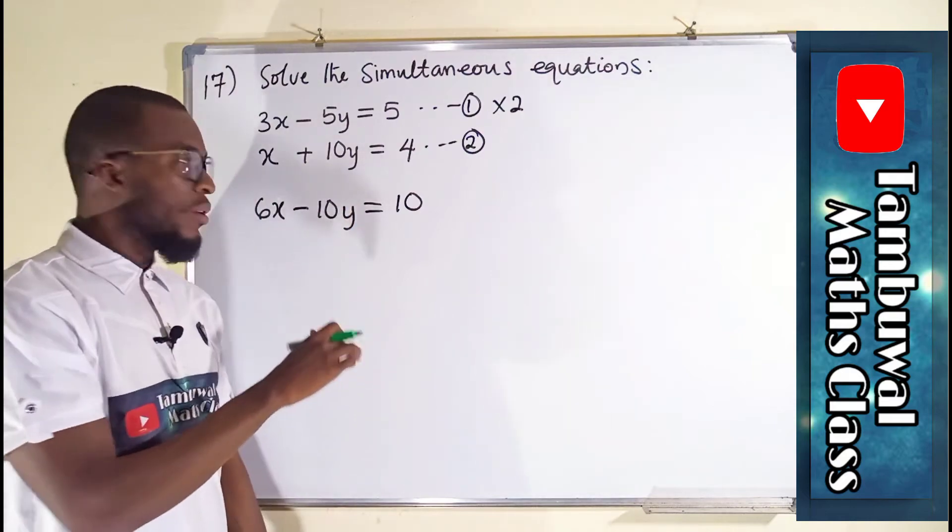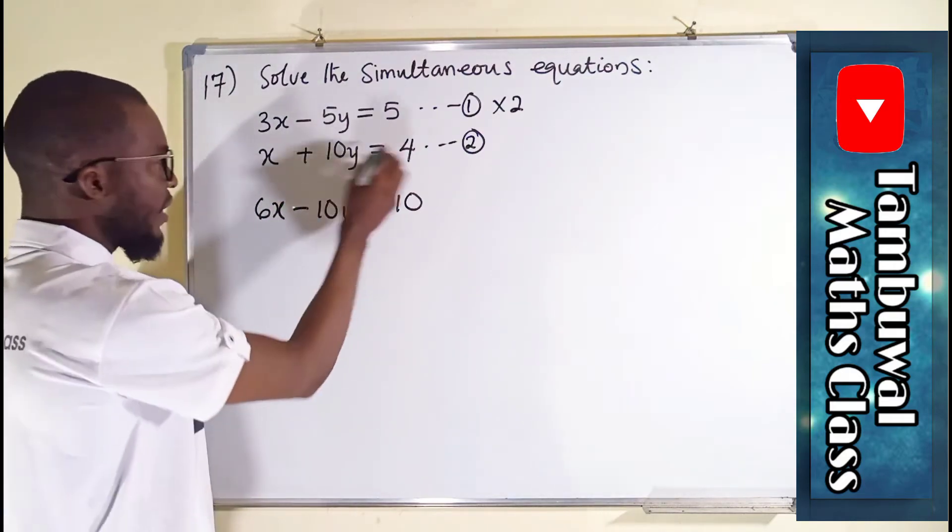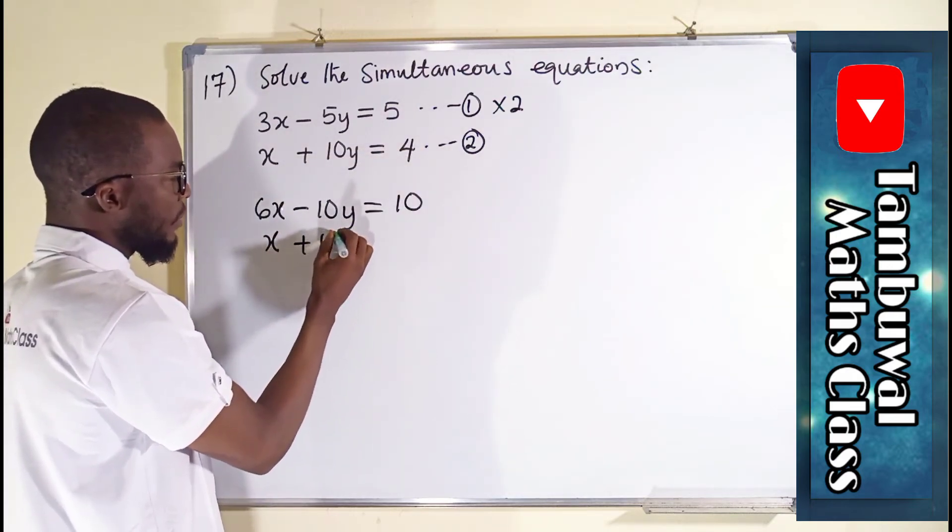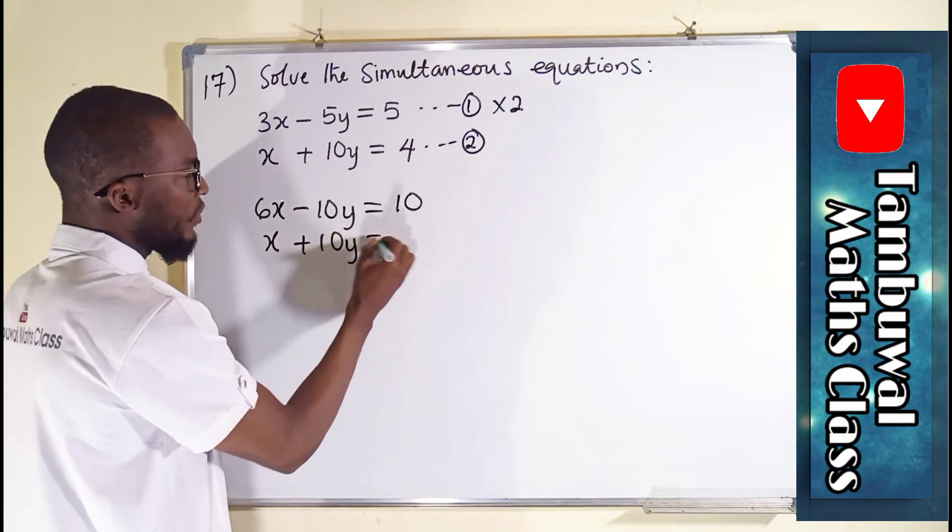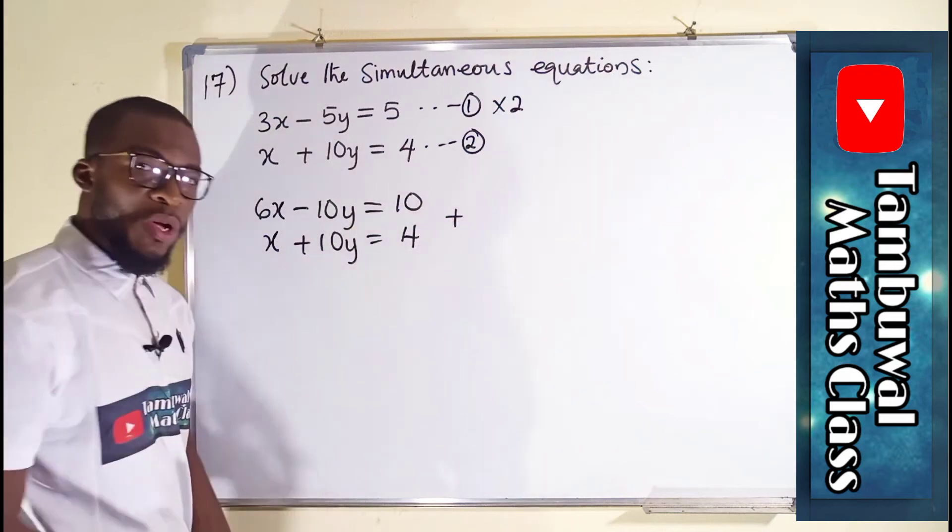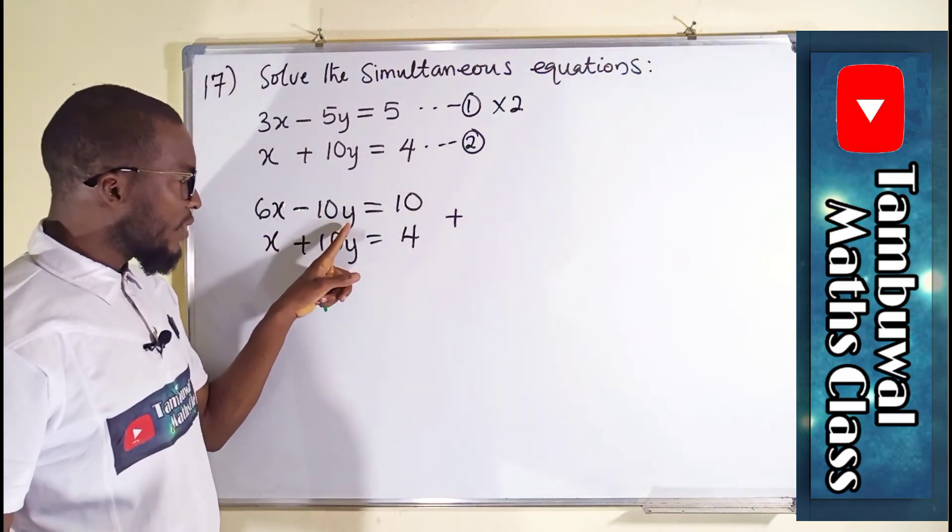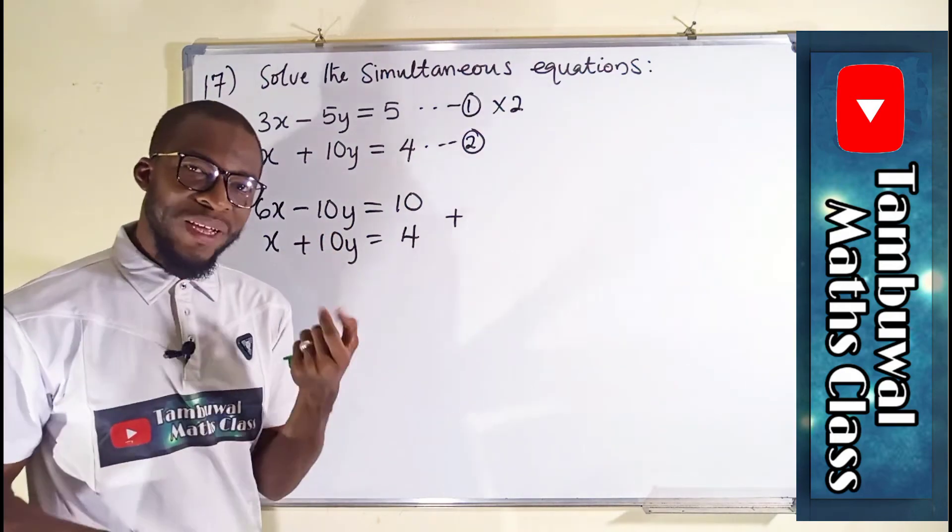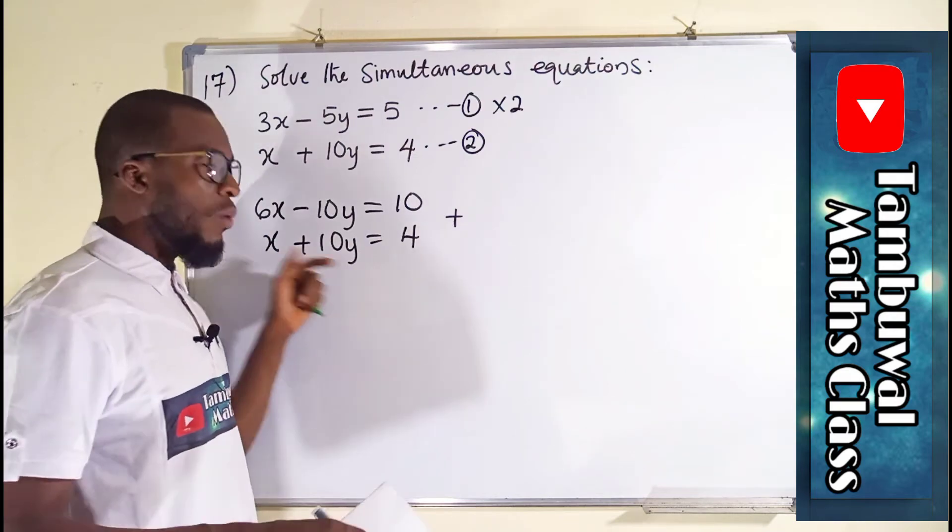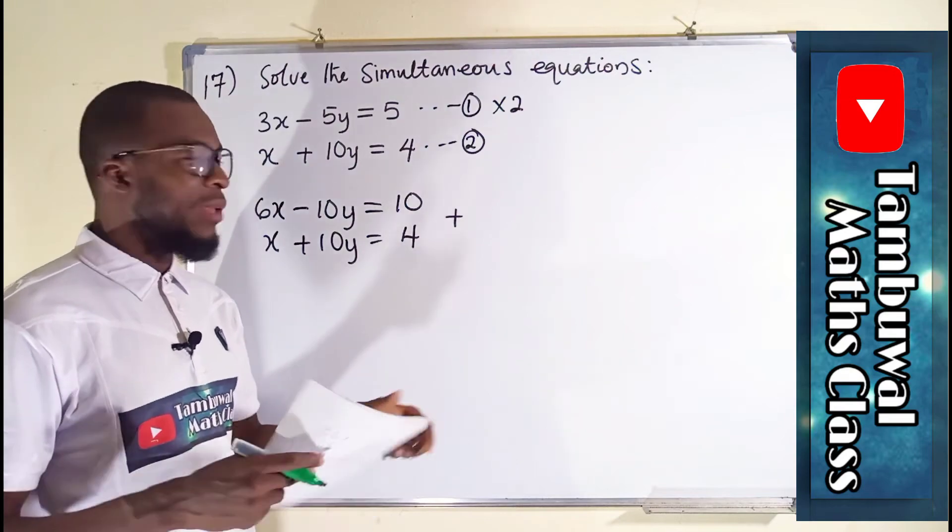Since we have common coefficient, do not bother yourself with the signs. We can rewrite equation 2 here, which is x plus 10y equals 4. So these two equations, we can add them together because if you add minus 10 and positive 10 together, you are going to obtain 0. But suppose they have the same signs, we have to subtract. Once they have different signs, we add in order to eliminate them.